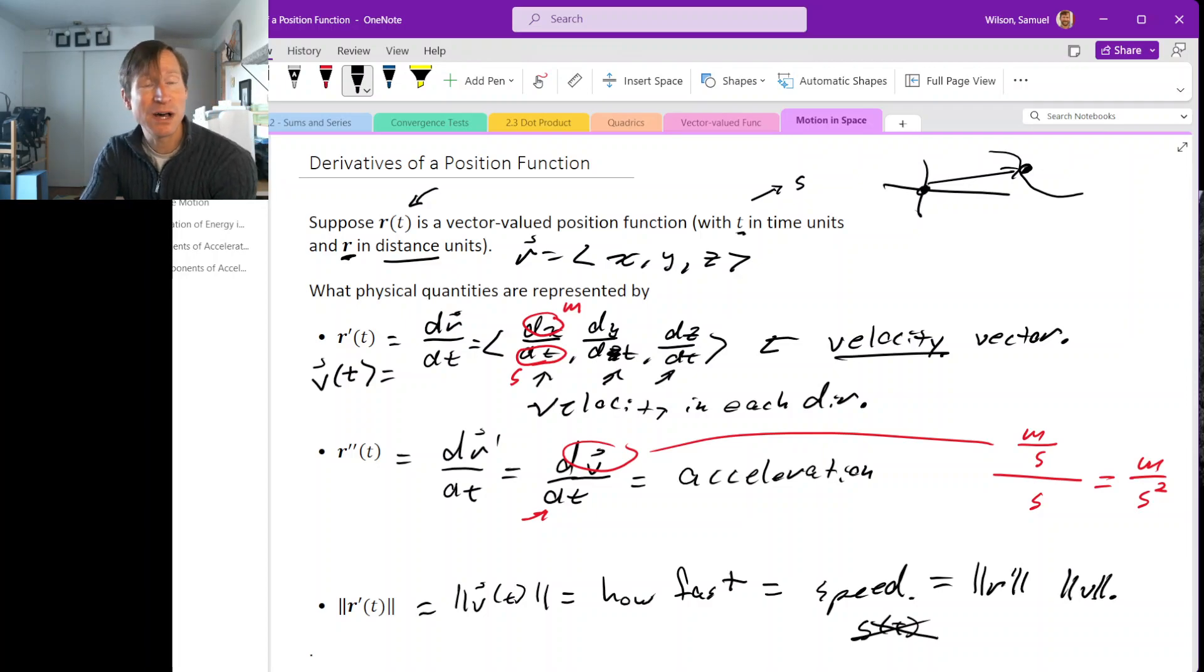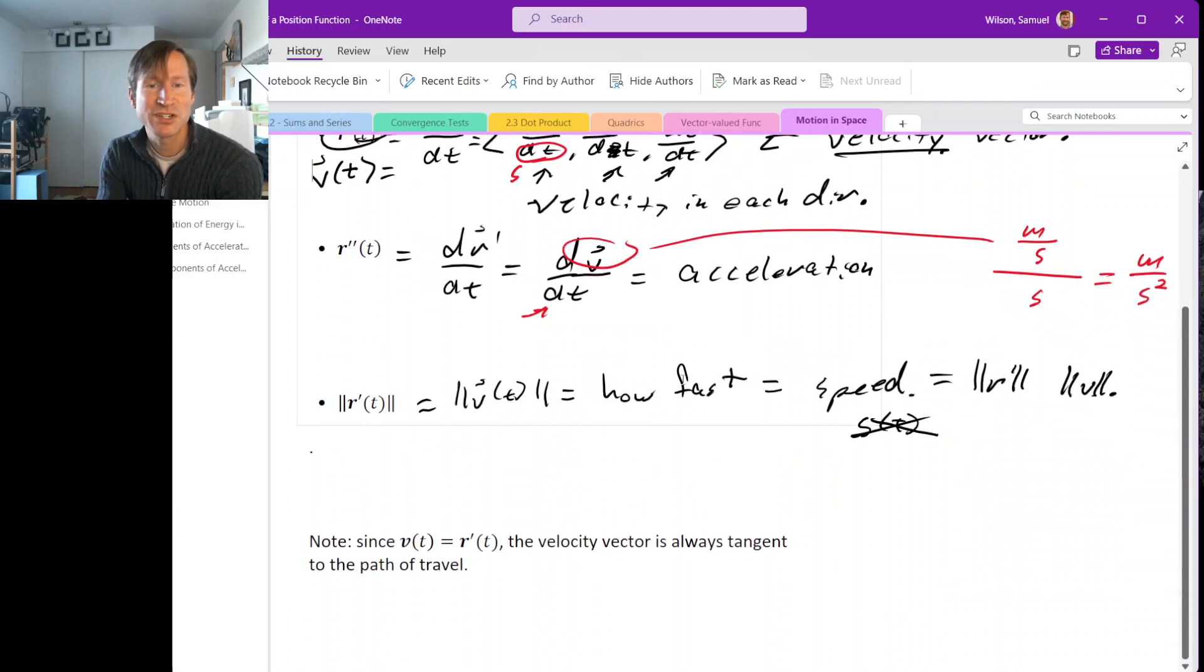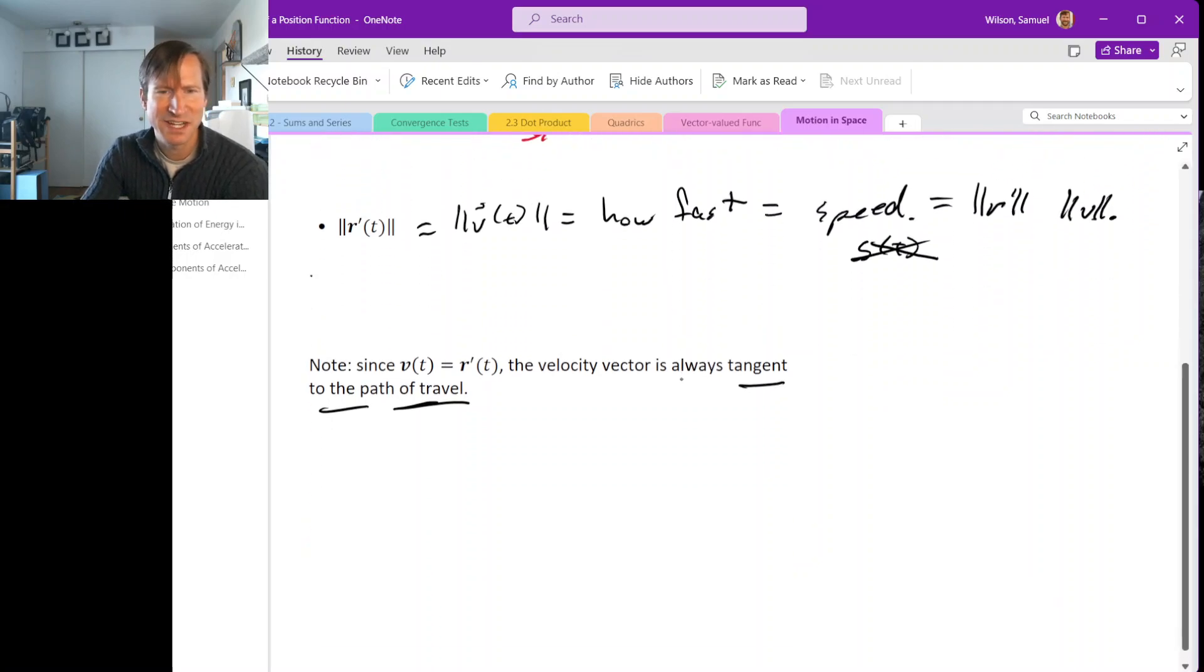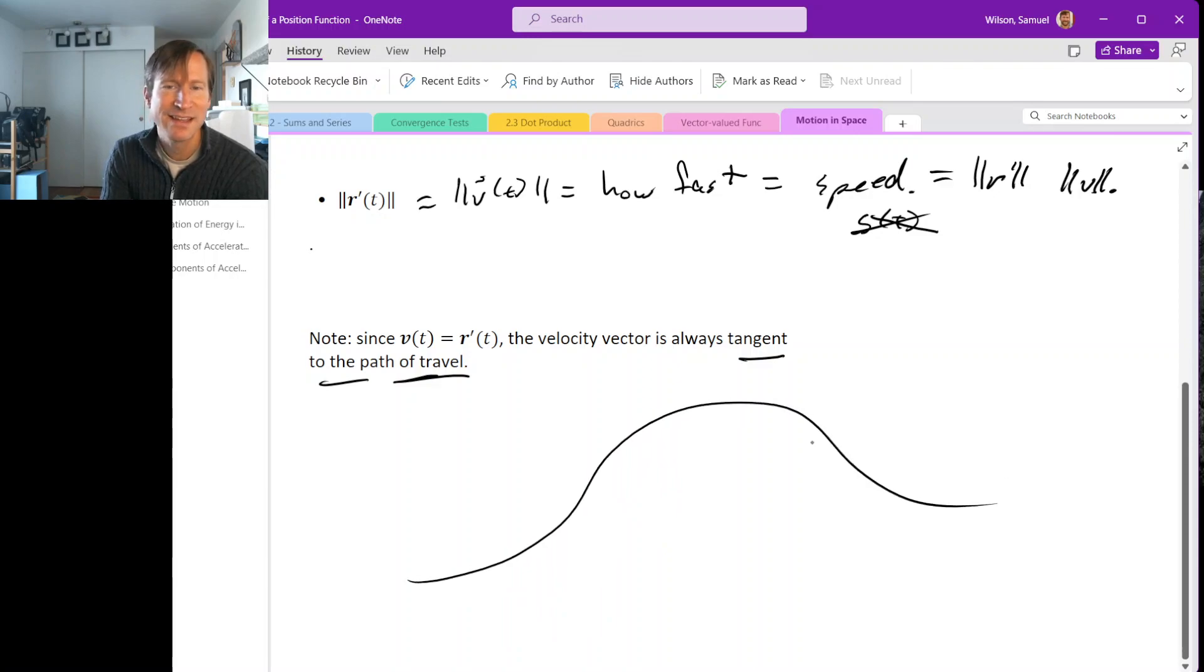So one thing to keep in mind about these quantities, and about r-prime in particular, is that since it's the velocity vector, this velocity vector is always tangent to the path of travel. That's going to be a key property that the velocity vector has. So whatever the path is that we're moving along at each point, the origin of the coordinate system is down here somewhere. And so this is our position at some time. So it's r evaluated at some time, which I'm calling t-naught.